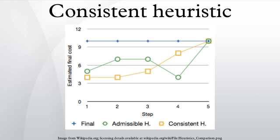A consistent heuristic is also admissible — that is, it never overestimates the cost of reaching the goal. This is proved by induction on the length of the best path from node to goal. By assumption, m denotes the cost of the shortest path from n to the goal, therefore making it admissible.